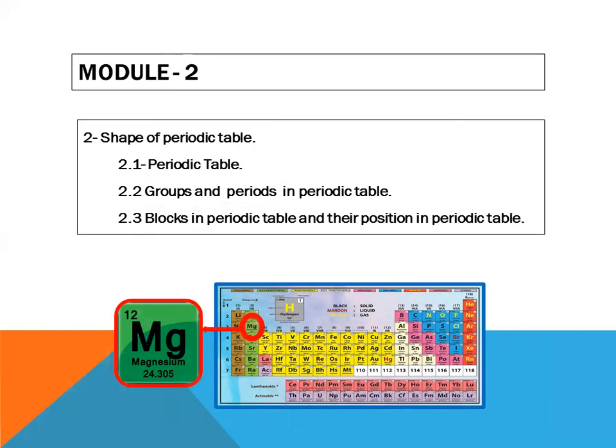Then, groups and periods in the periodic table. And finally, blocks in the periodic table and their position in periodic table. And why this information is required to write the electronic configuration.